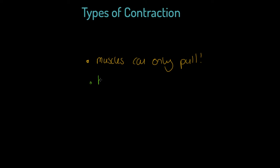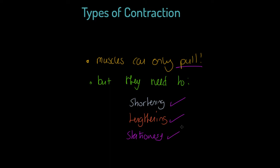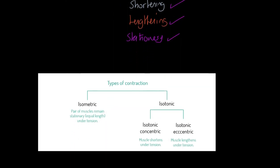But what if I was to say to you, they need to do all of the following. They need to produce contractions where the muscle is shortening. They need to produce movement where the muscle is lengthening. And they need to produce contractions where the muscle stays completely stationary. So how can it be that a muscle can do nothing but pull, but can shorten, lengthen, and produce stationary contractions? We're going to answer it almost in kind of like subheadings.